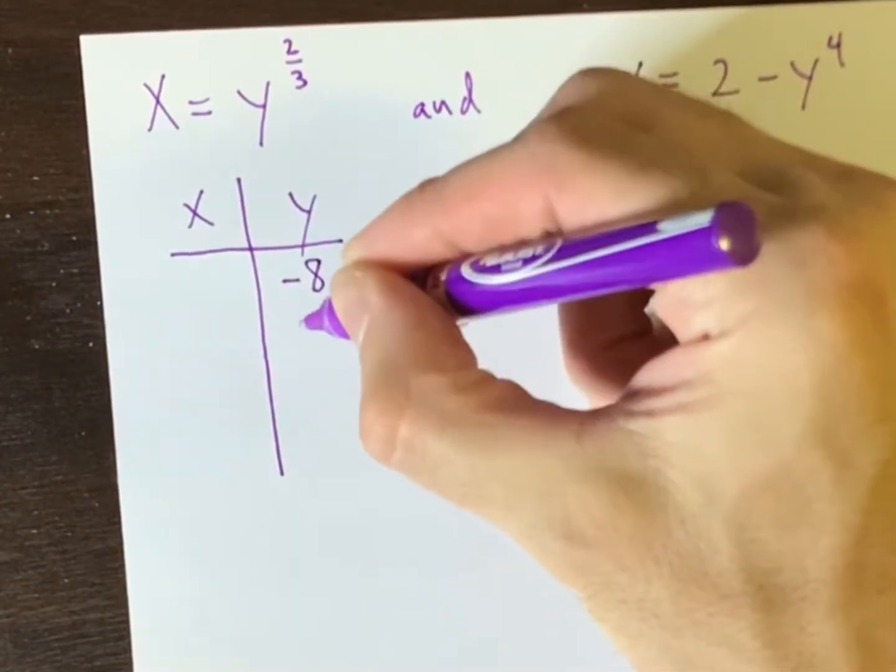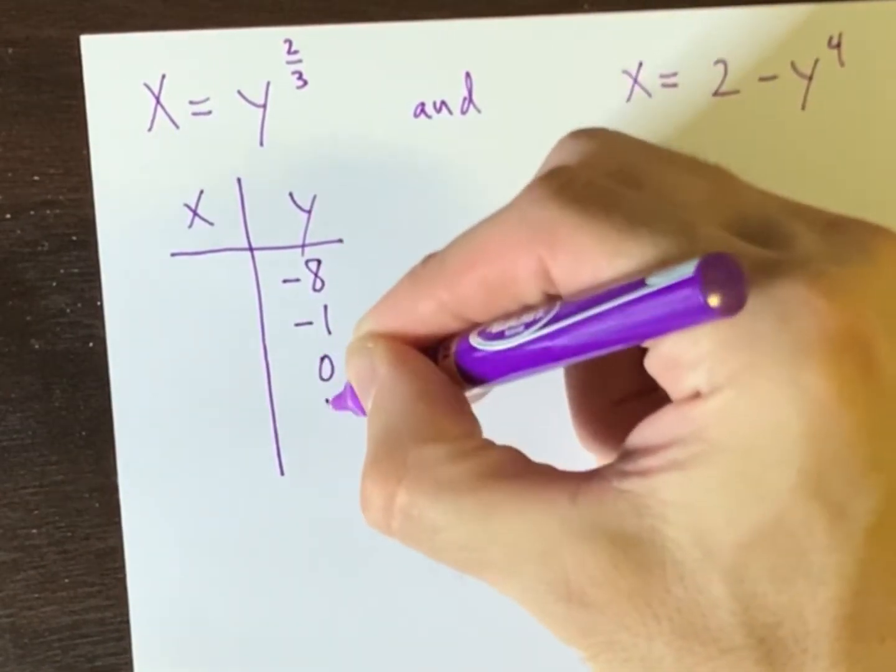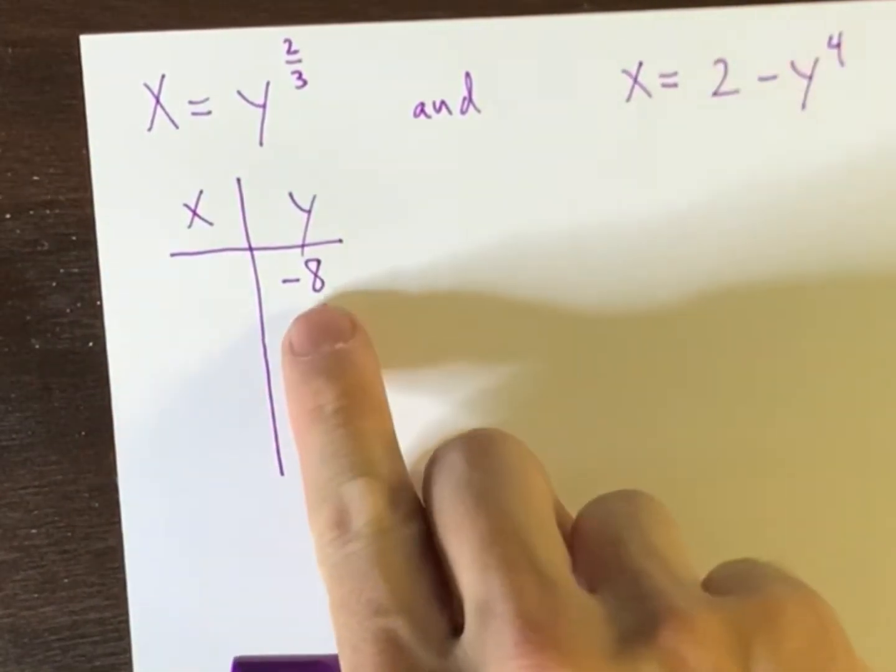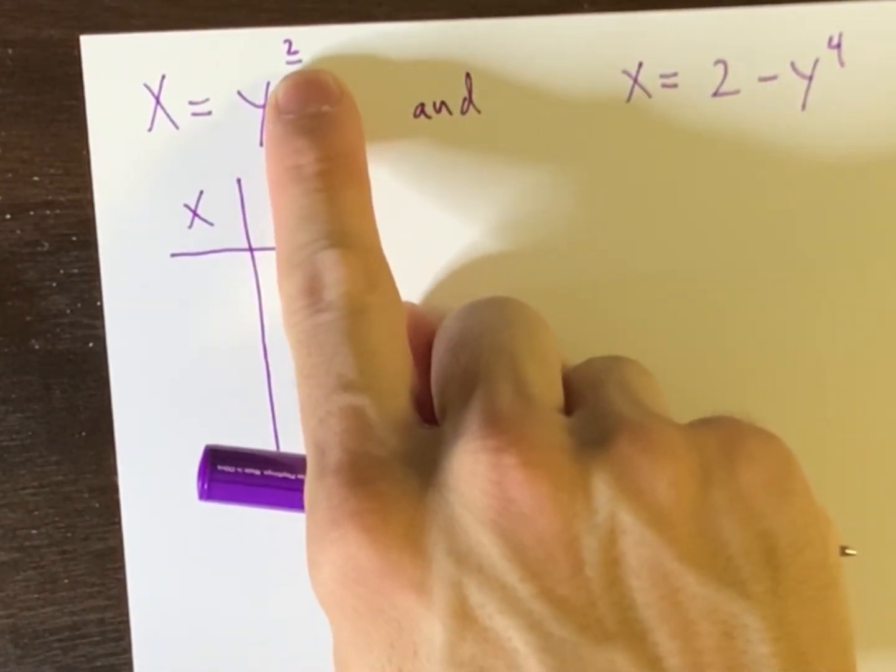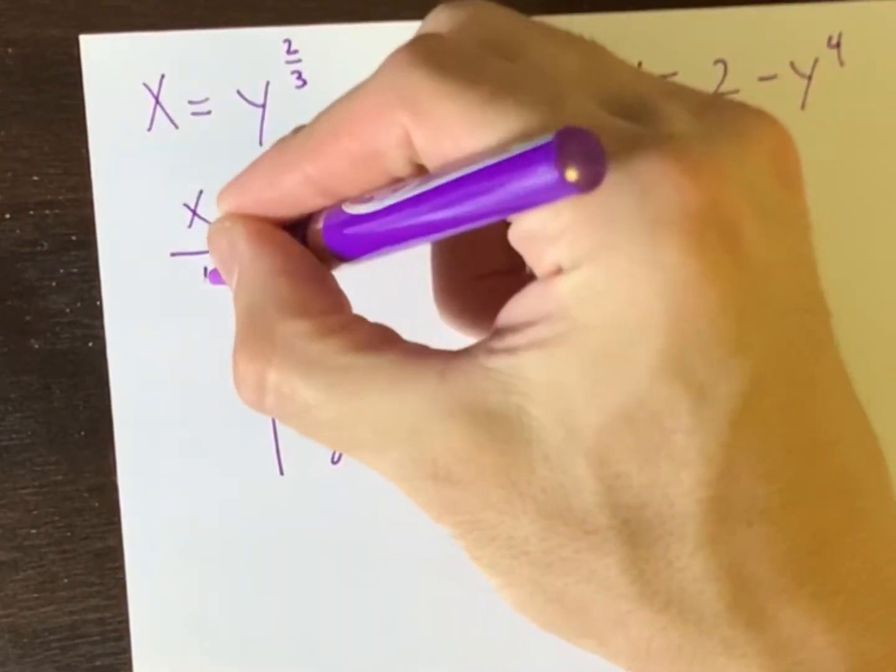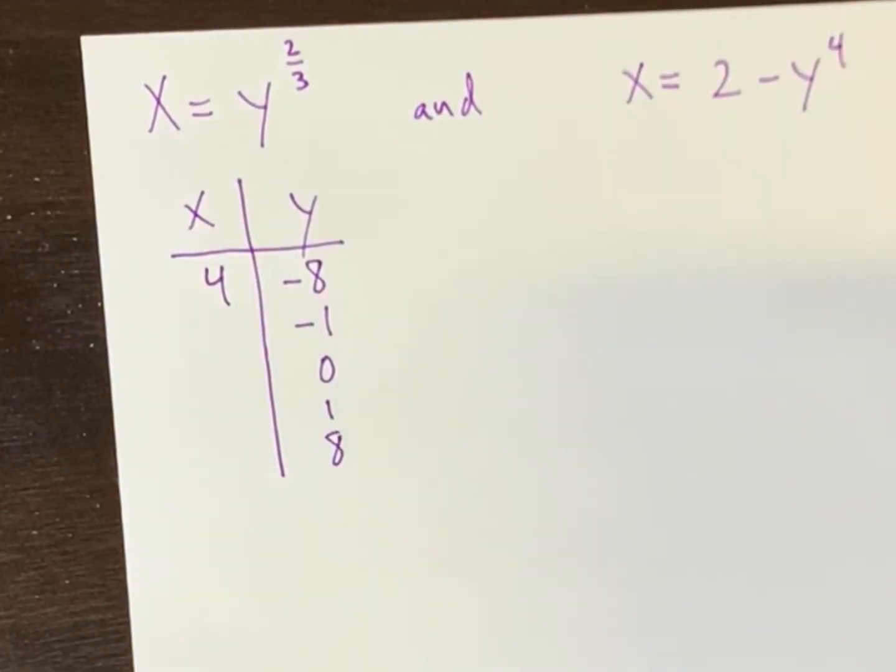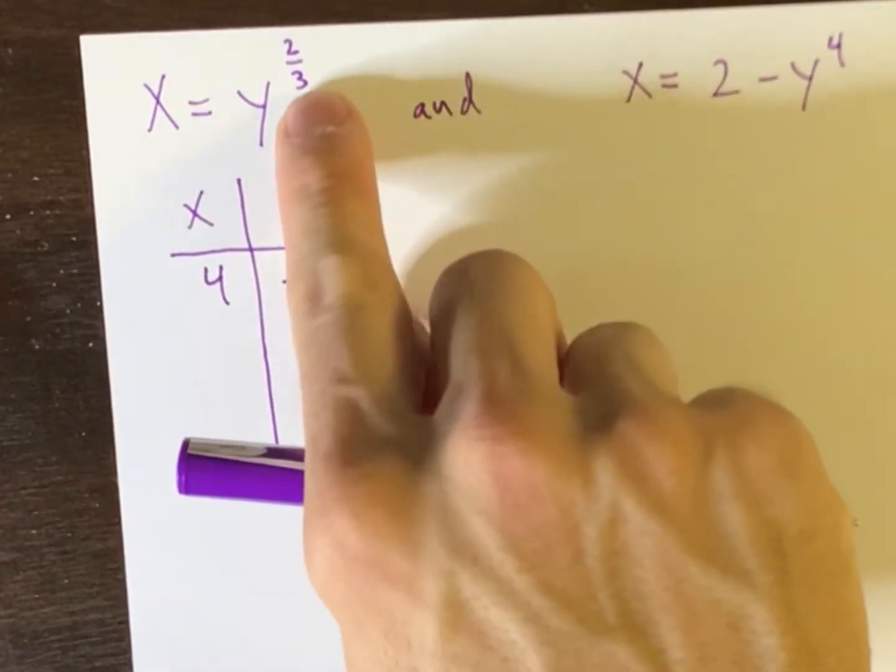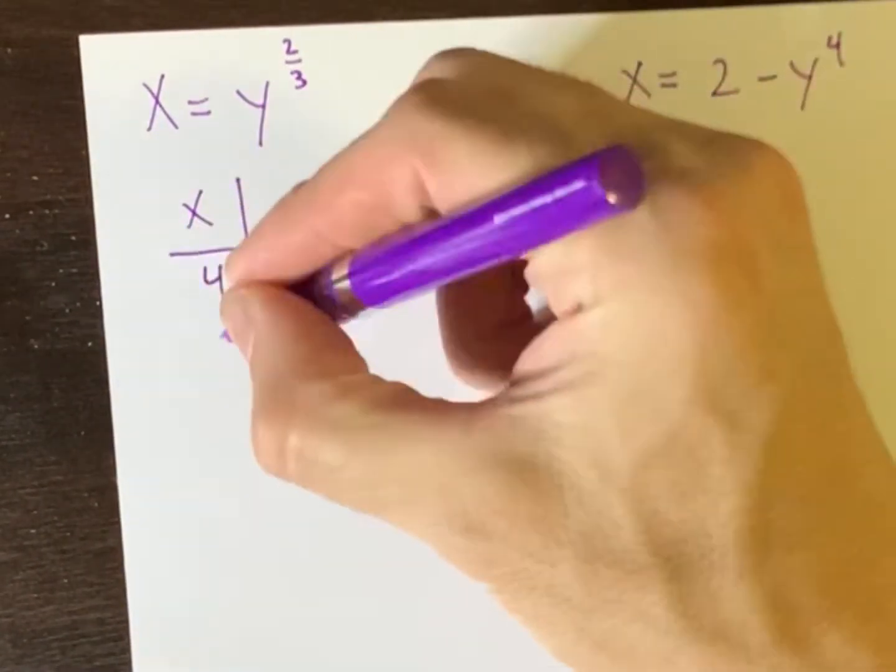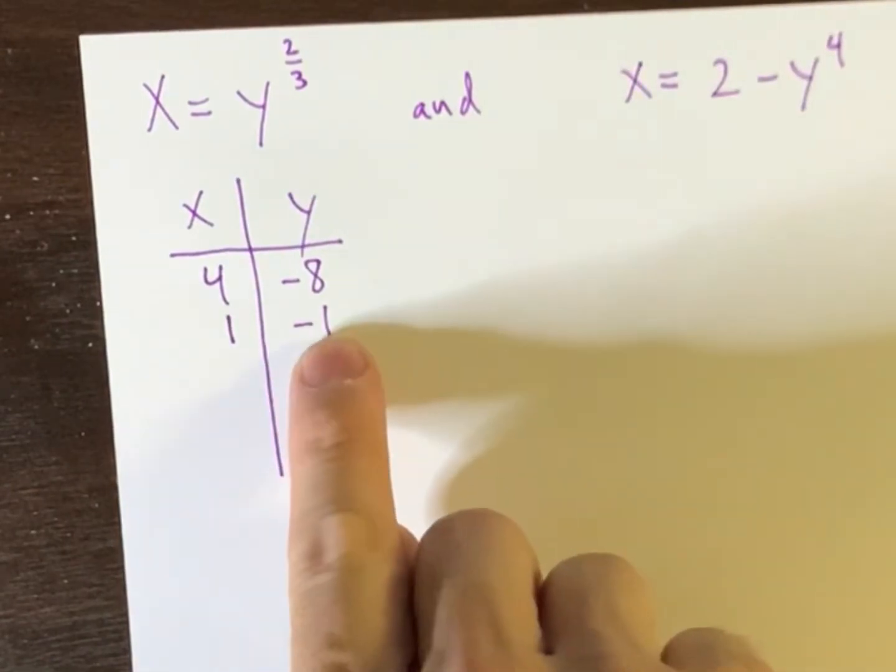Negative eight, negative one, zero, one, and eight. If I plug negative eight in for y here, the cube root of negative eight is negative two. Square root is four. So that is the associated x value. Plug a negative one for y. Cube root it, negative one. Square root one. That is the input for that output.